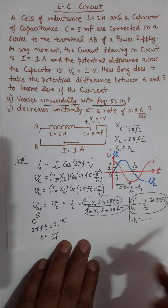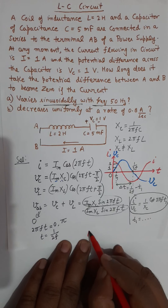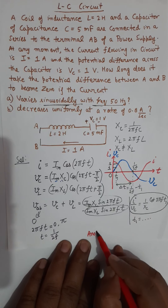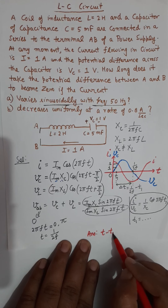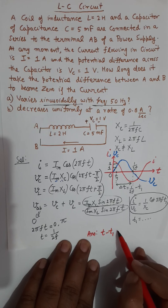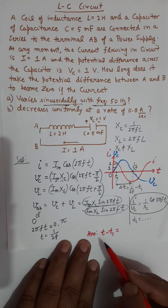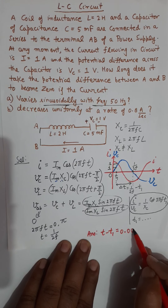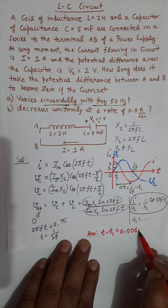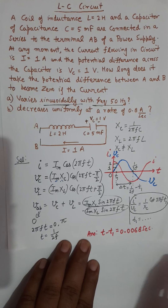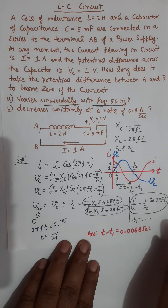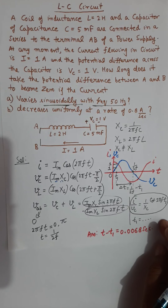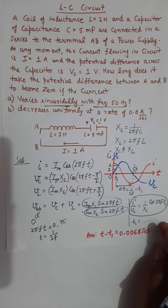The answer for part A will be t minus t1. If you put the numeric values, you will get the answer 0.0068 seconds.